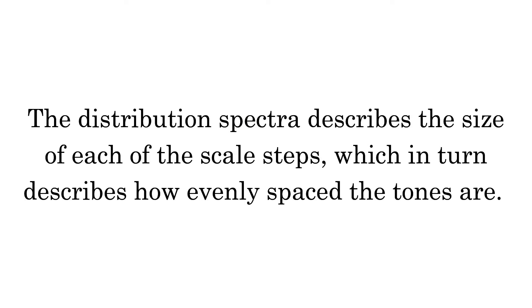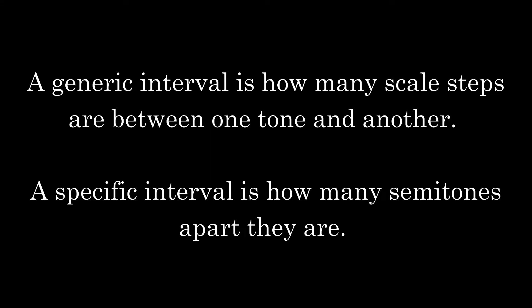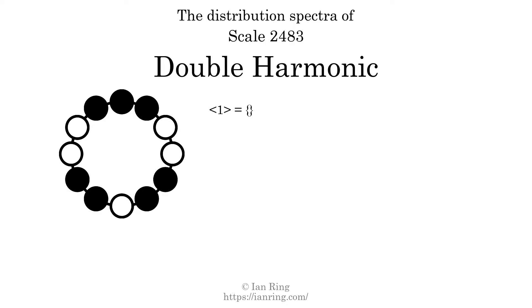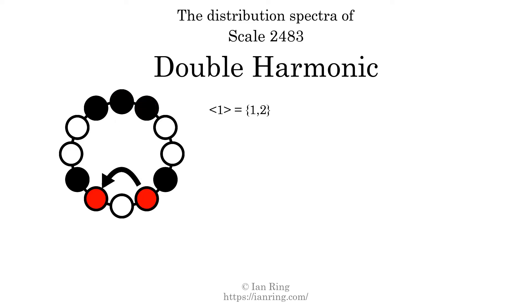The distribution spectra describes the size of each of the scale steps, which in turn describes how evenly spaced the tones are. A generic interval is how many scale steps are between one tone and another. A specific interval is how many semitones apart they are. The generic interval of one scale step comes in three different specific interval sizes: one semitone, two semitones, and three semitones.